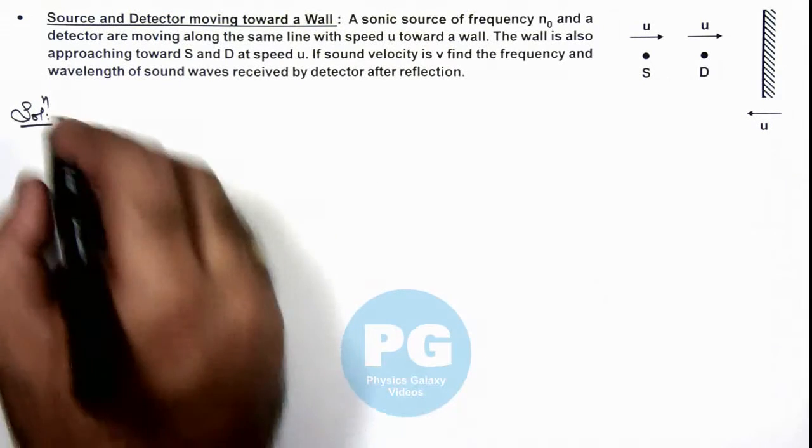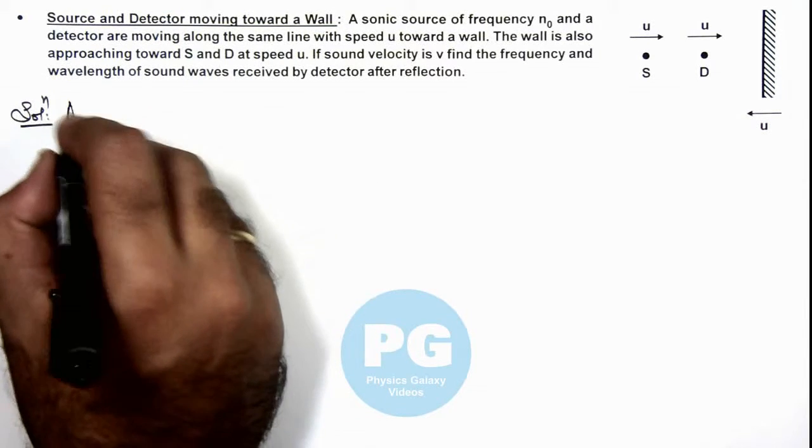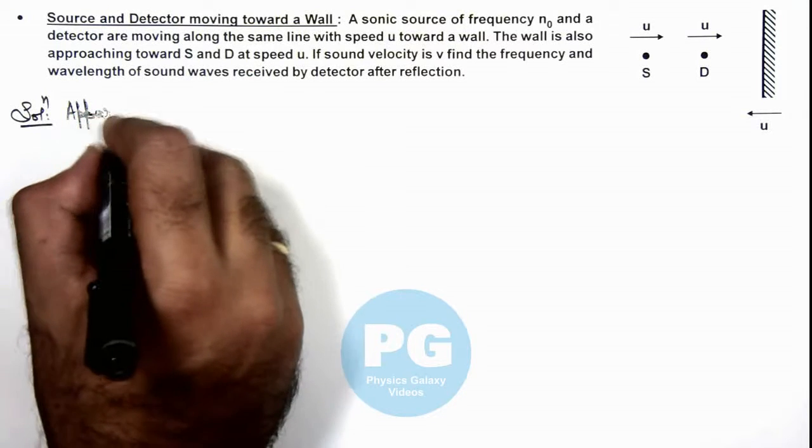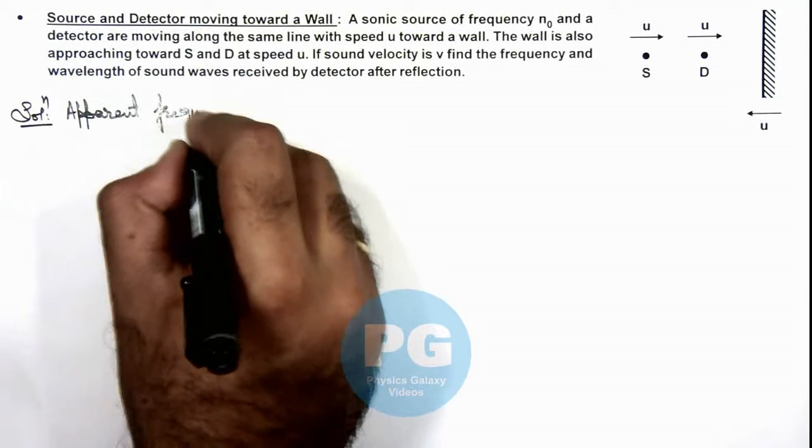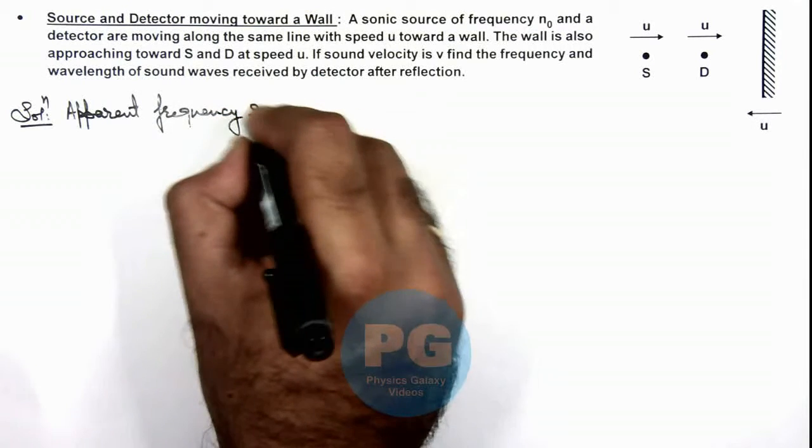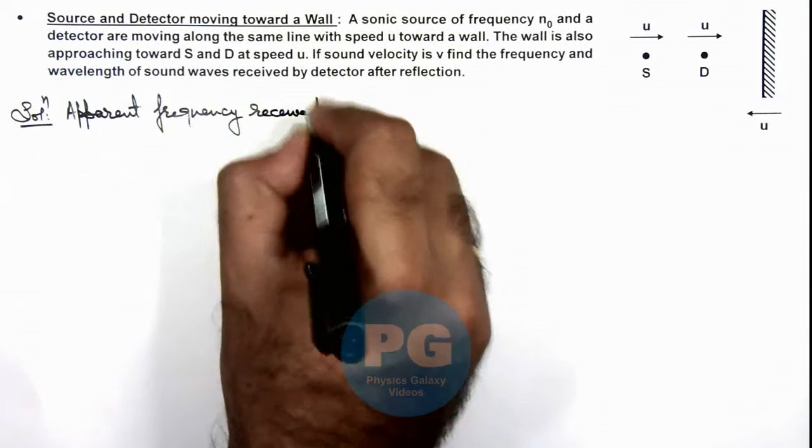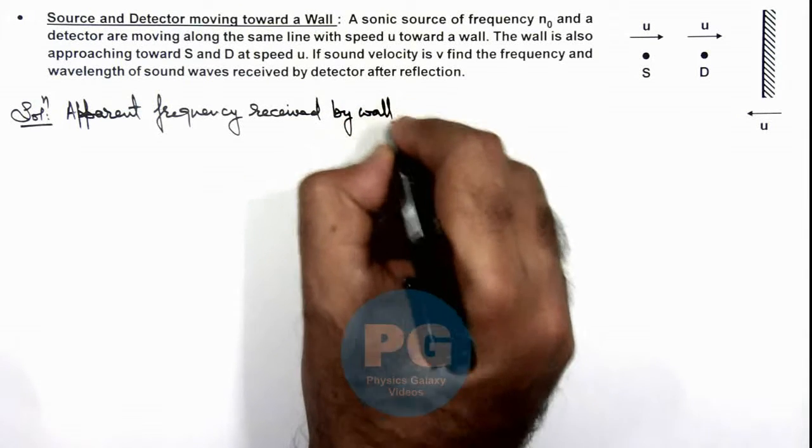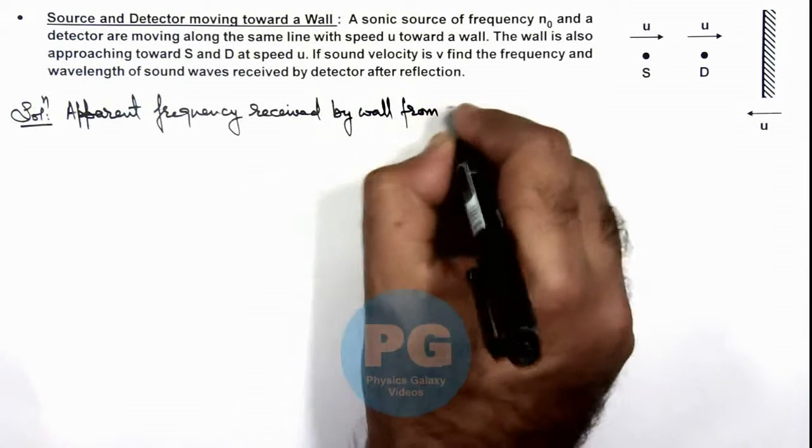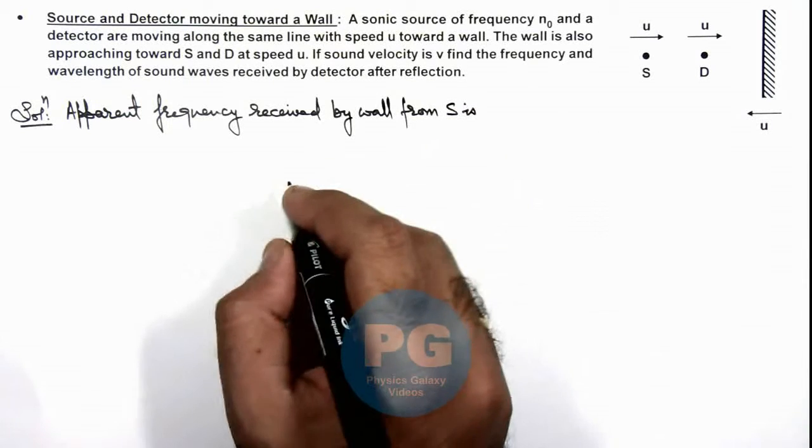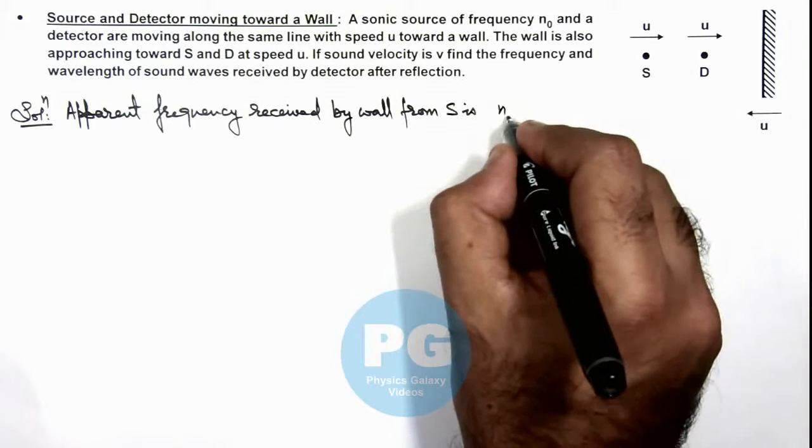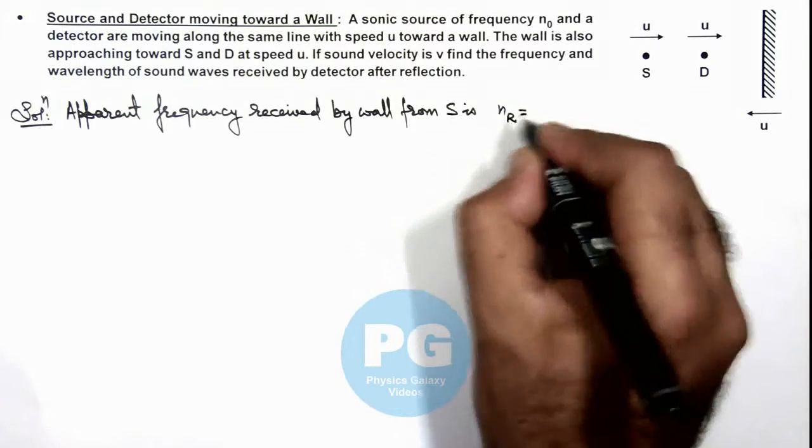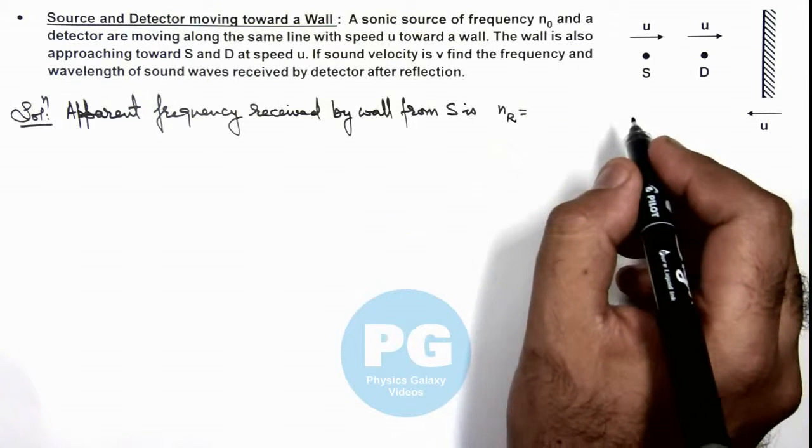So first we can calculate the apparent frequency received by wall from source. This we can write as n received by the wall. We can directly use the relation of Doppler's effect.